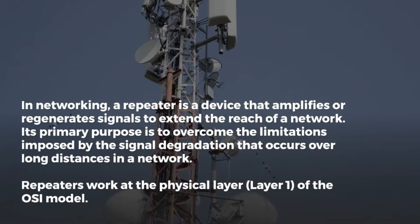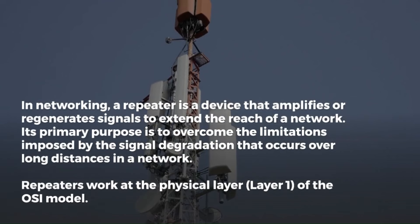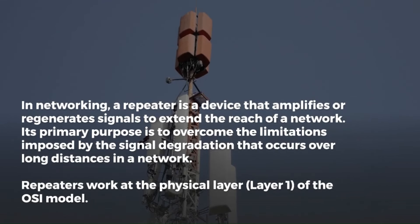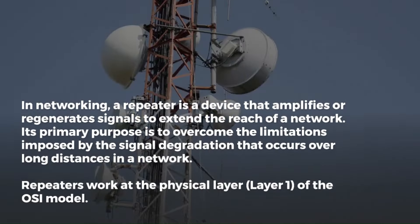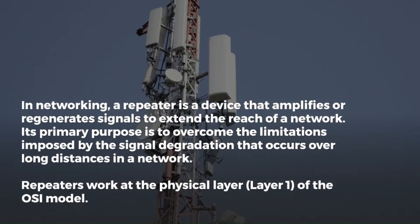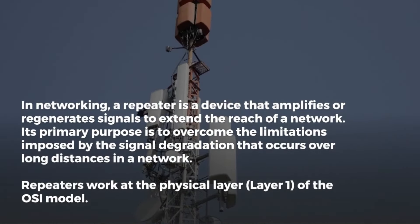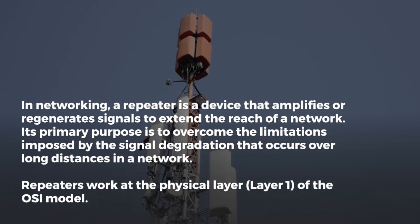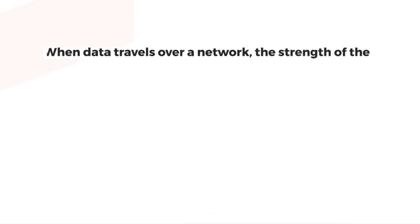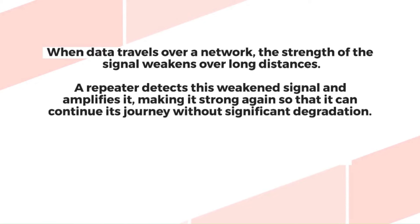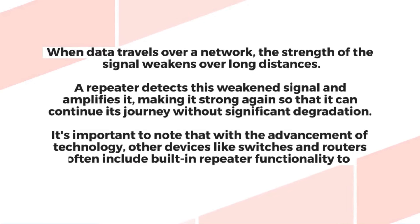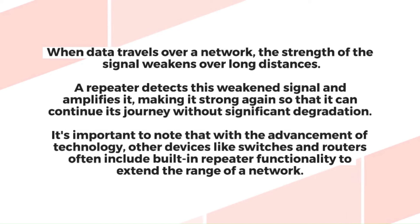In networking, a repeater is a device that amplifies or regenerates a signal to extend the reach of a network. Its primary purpose is to overcome the limitation imposed by signal degradation that occurs over long distances. Repeaters work at the physical layer 1 of the OSI model. When data travels over a network, the strength of the signal weakens over long distances. A repeater takes this weakened signal, amplifies it, and makes it strong again so it can continue its journey without degradation.